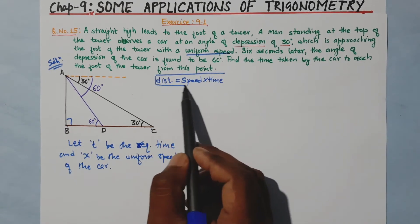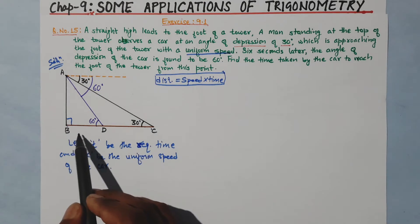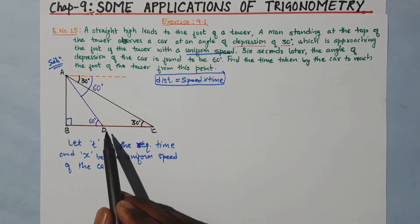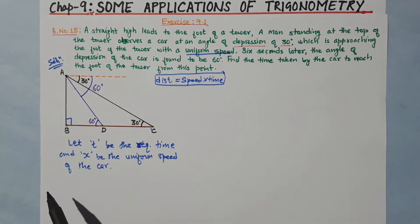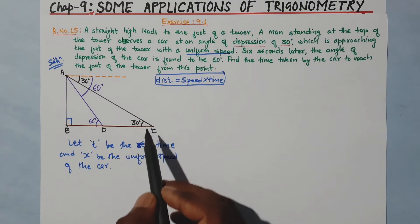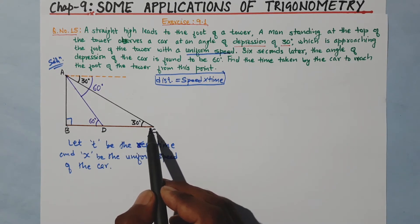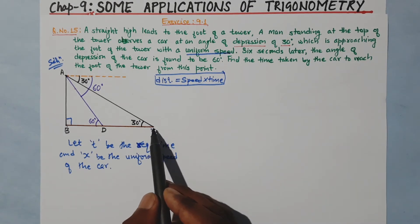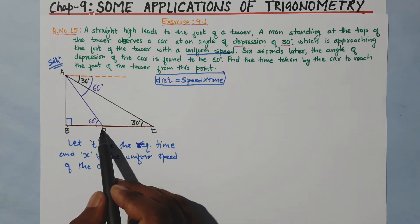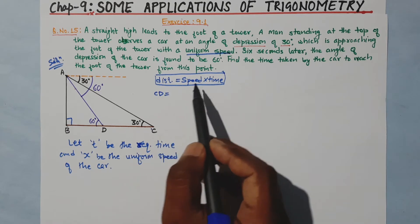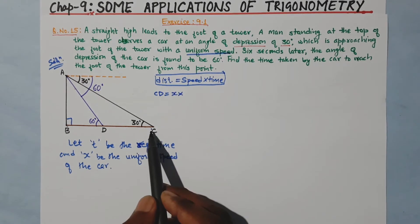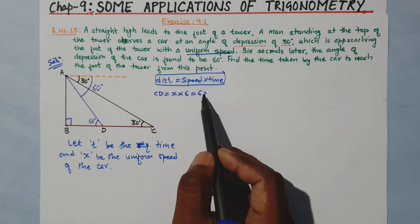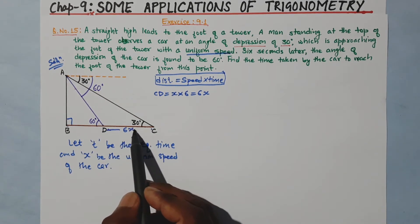AB is a length, CB is a length, and DB is a length — length means distance. So we can use speed into time. CD is the distance traveled by the car from C to D in 6 seconds. Speed is x and time is 6 seconds, so CD equals x into 6, which is 6x.